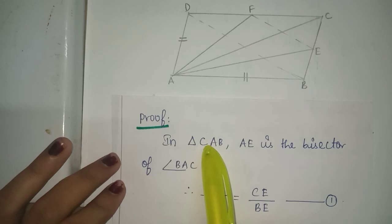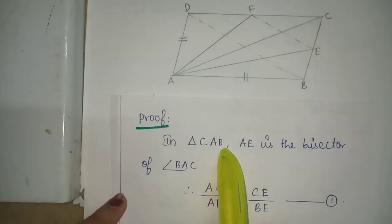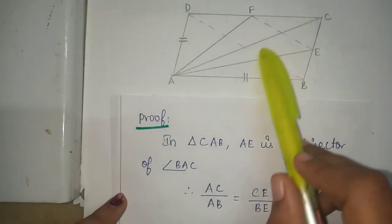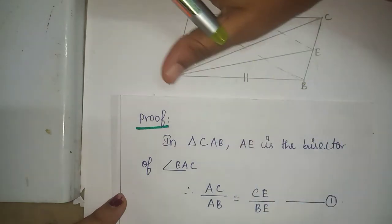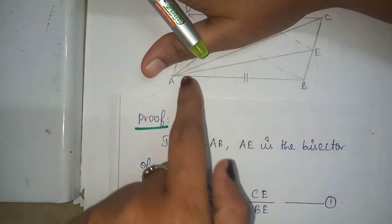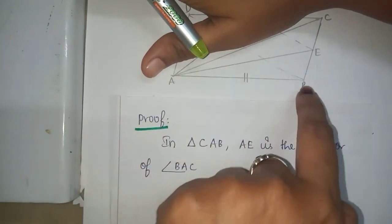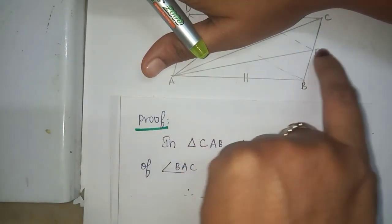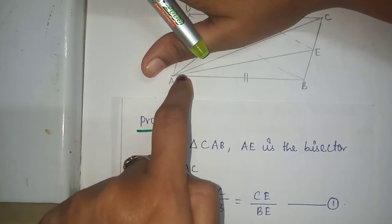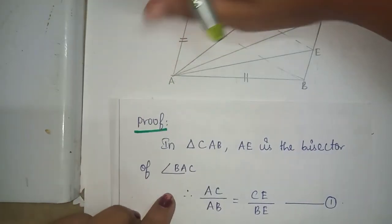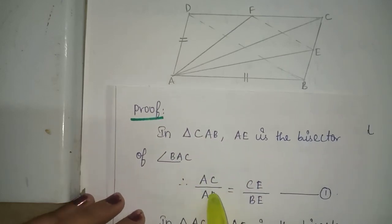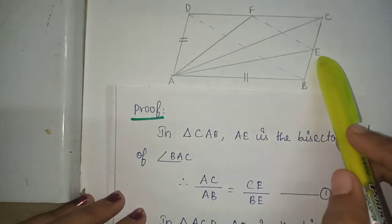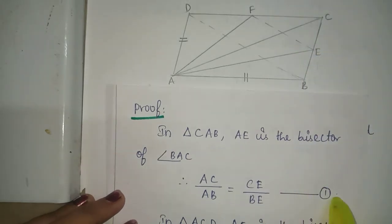Proof: in triangle CAB, AE is the bisector of angle BAC. By the angle bisector theorem, we can write AC by AB is equal to CE by BE — equation 1.